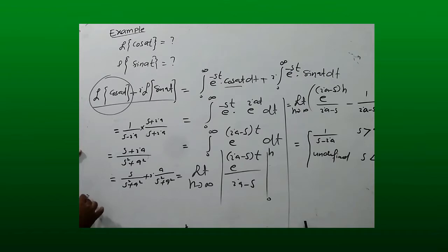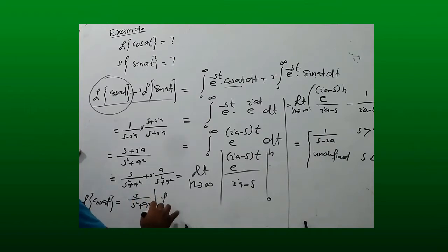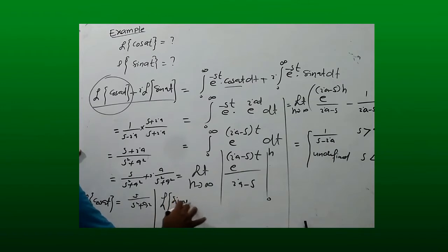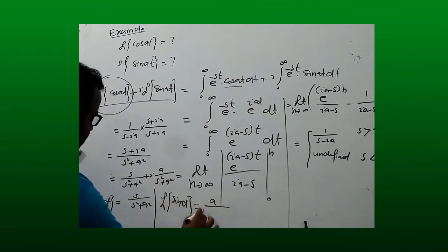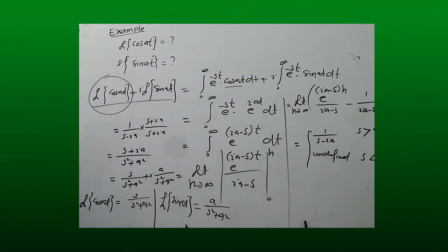Comparing the real and imaginary parts, we get: L{cos(at)} = s/(s² + a²), and L{sin(at)} = a/(s² + a²). Thank you very much.